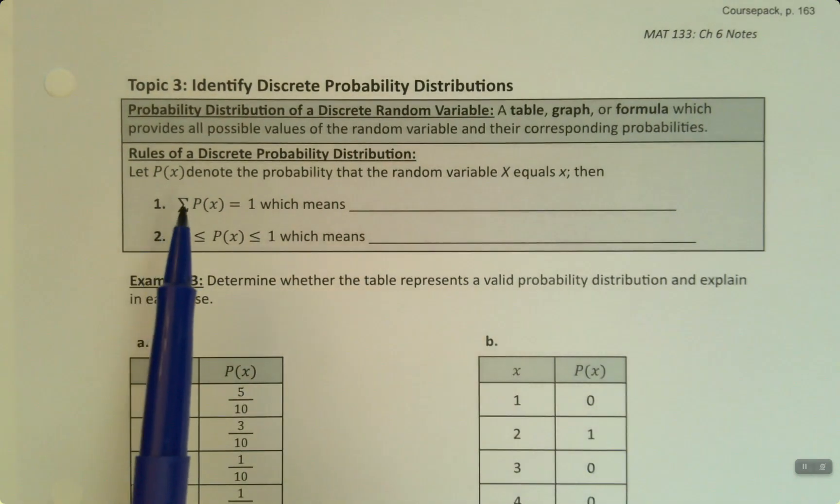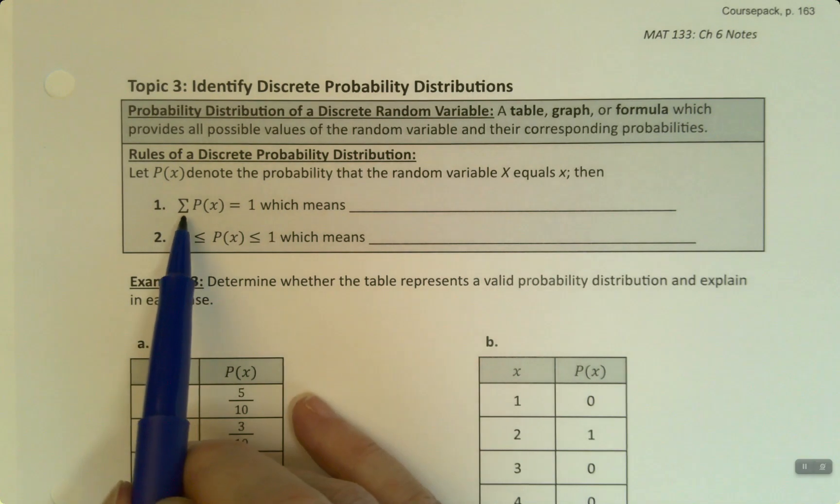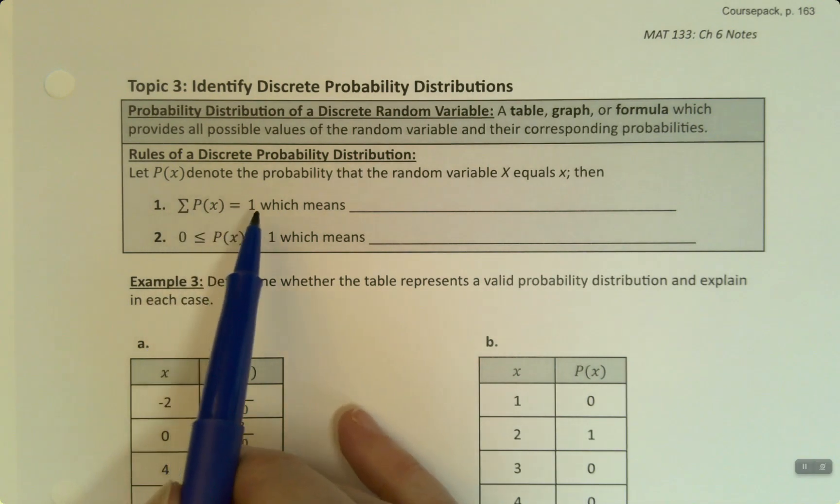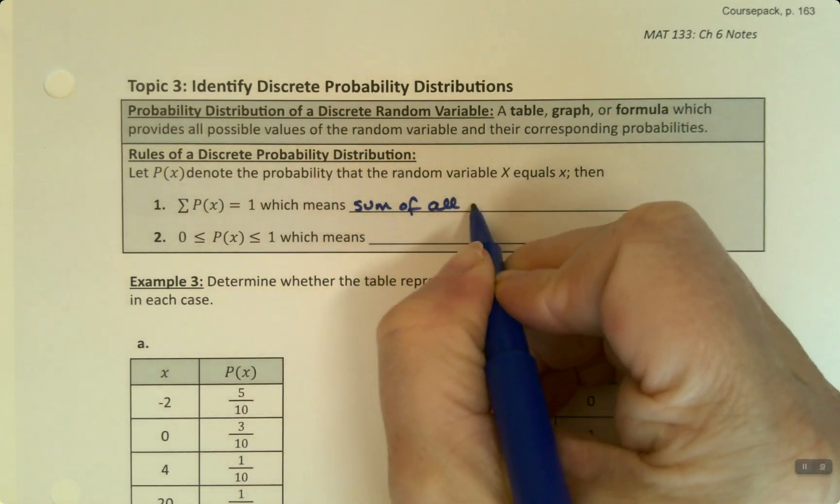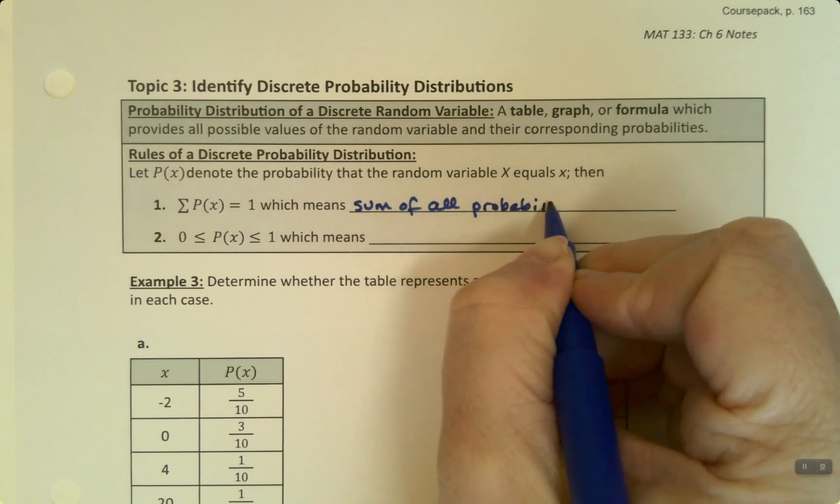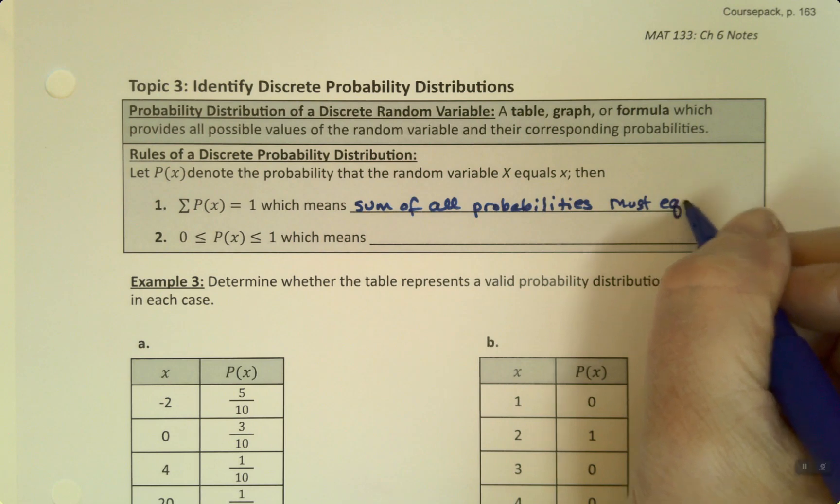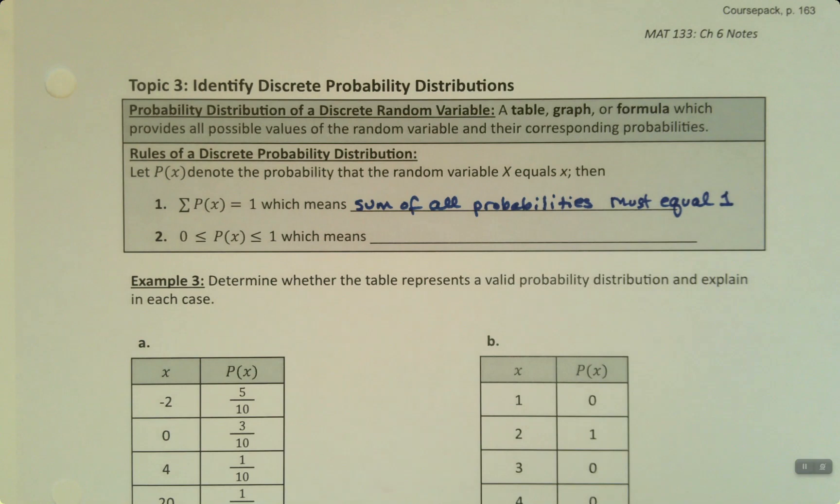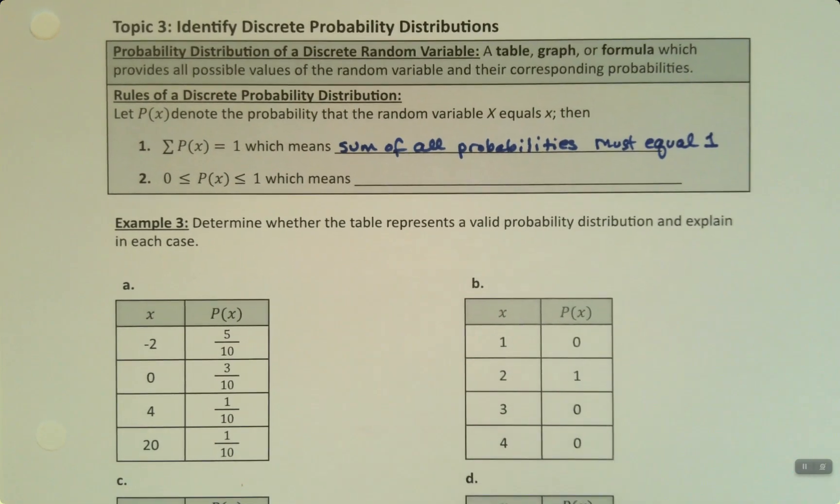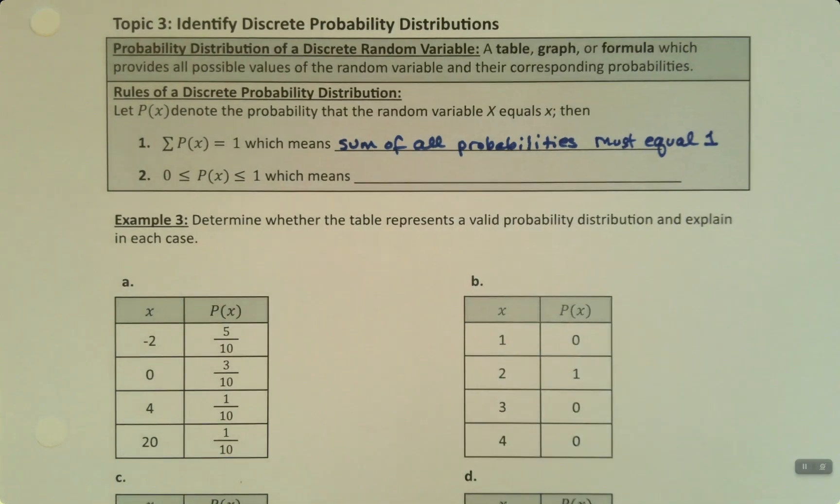All right, now the rules of a discrete probability distribution follow the same rules that we have for probability distributions in general, which is that the sum of the probabilities must equal 1. They have to add up to 1. With a relative frequency distribution empirical probabilities, it's not the end of the world if it goes to 0.999 because of rounding error, but in general they should be 1.